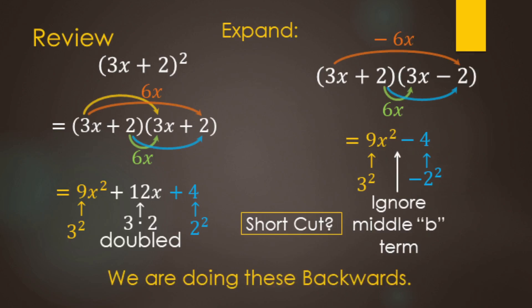Now we are going to do these backwards — that's what this video is about. Check this out: we have 9x squared, where 9 is a square, minus another square (2 squared = 4). So that's a difference of squares — you're subtracting two squares. The other one over here is a perfect square: it's a binomial squared. So those are the two patterns we're looking at for the questions in this video.